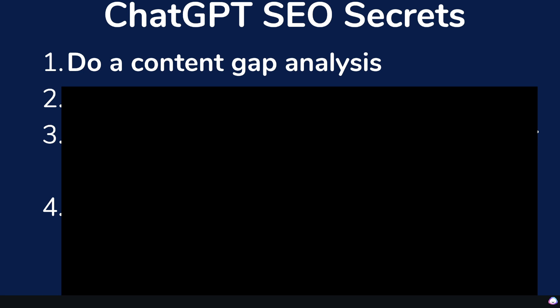The first thing you need to do before even writing your content is making sure you're doing an in-depth content gap analysis of where your competitors are, where your article is, and you want to figure out how you can get your article as close as possible to the top ranked blog post for that specific keyword you're going after.